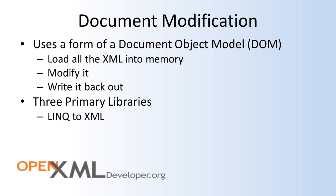The first is LINQ to XML. While LINQ to XML can be used in a pure functional approach — where you don't focus on modifying documents in memory, but instead focus on completely transforming and producing new XML trees from source XML trees — its default approach is the document object model. You load all the XML for the main document part into memory, modify it, and write it back out. LINQ to XML can also be used for writing pure functional transformations, which I'll talk about later.